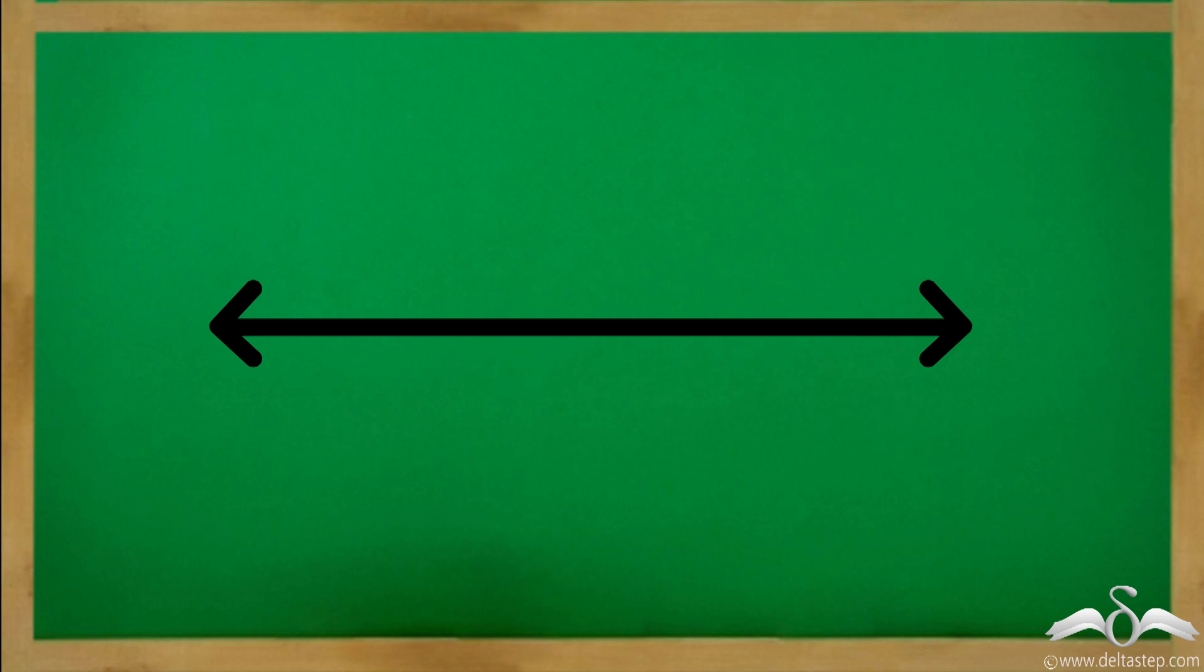Correct. That is why we draw two arrows on it on either side to show it never ends. It contains countless number of points. We can never draw a complete picture of a line.